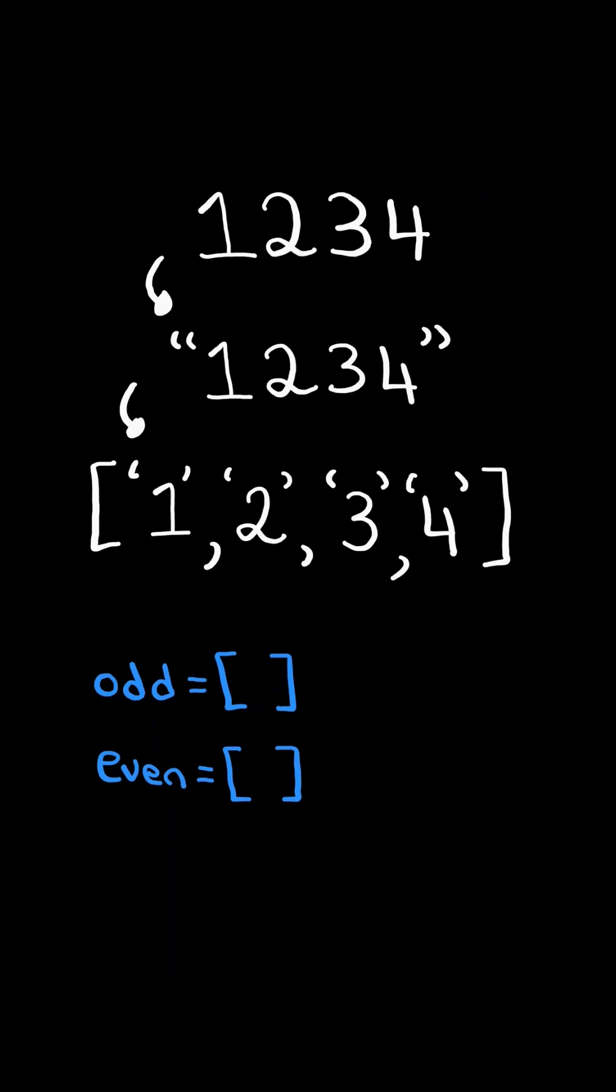We then initialize an even and an odd list, and iterate through the list. We put the odd numbers in the odd list, and the even numbers in the even list. We then sort the odd list in descending order, and sort the even list in descending order.